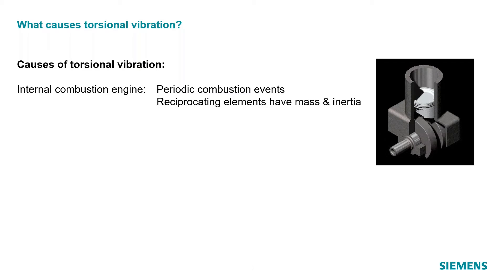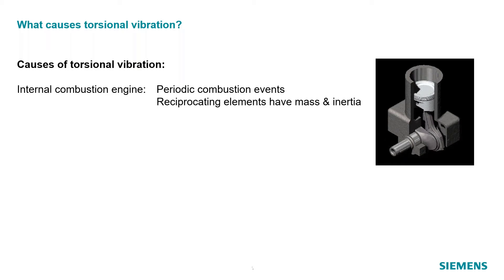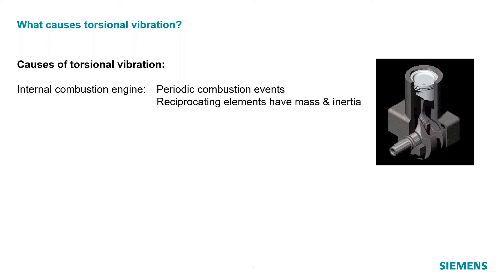Not only do we have these periodic combustion events, but we also have all these reciprocating pieces, and each of them has mass. Put that mass in motion and we have inertia. To move it back and forth is going to cause some forces, and that's one of the main culprits in a combustion engine.